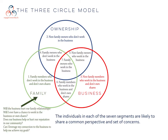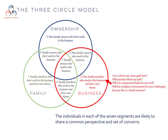Whereas those in circle number one, the family circle, are concerned about issues like: will the business hurt our family relationships? Will I ever have a chance to work in the business or own shares? Does our business help or hurt our reputation in the community? Can I leverage my connection to the business to help me achieve my goals? And those in number three — non-family members who work in the business but don't own shares — would ask: can I achieve my career goals here? Will nepotism block my path? Will I be compensated fairly for my work? Will the workplace environment be more challenging because this is a family business?